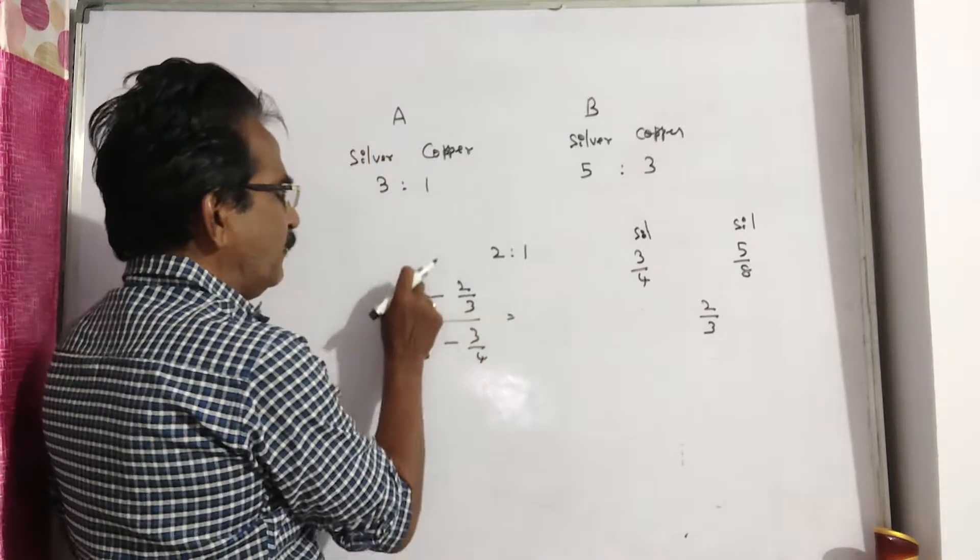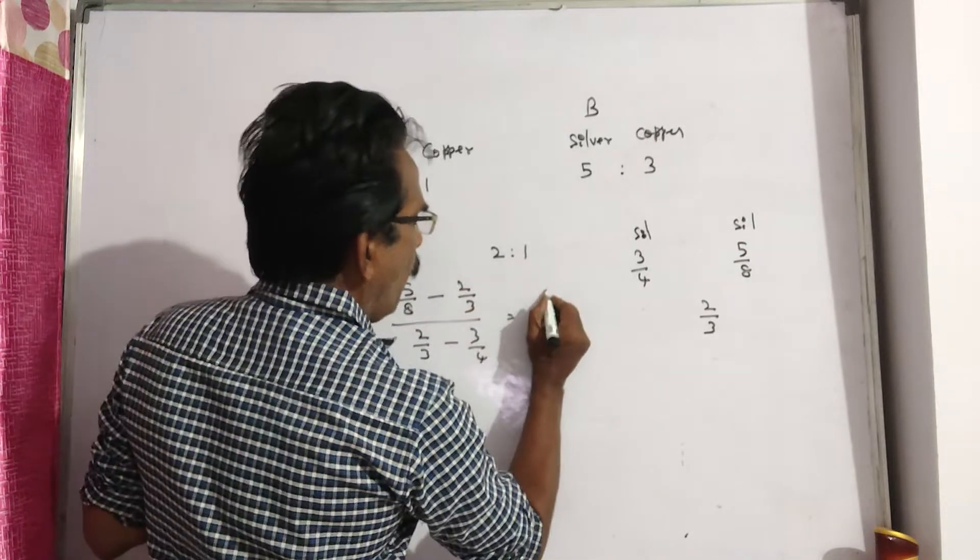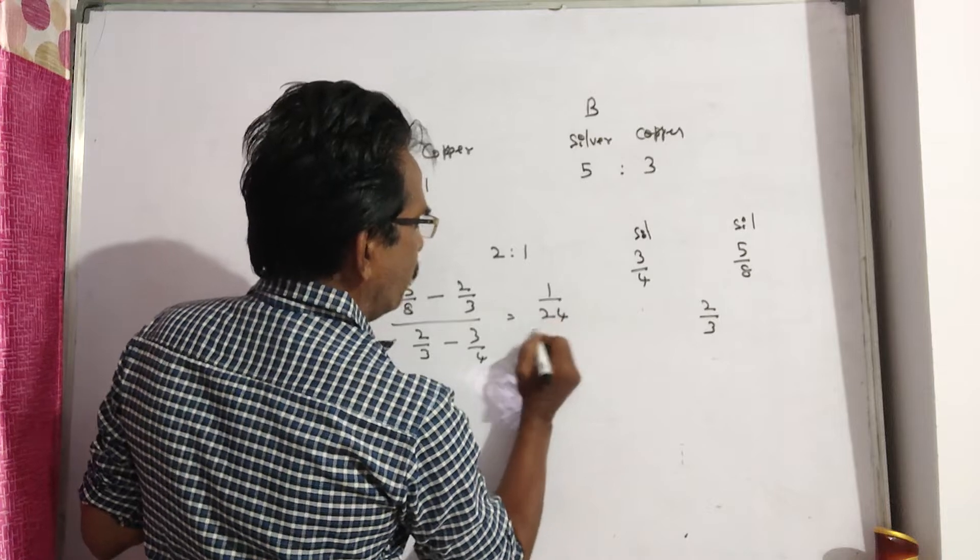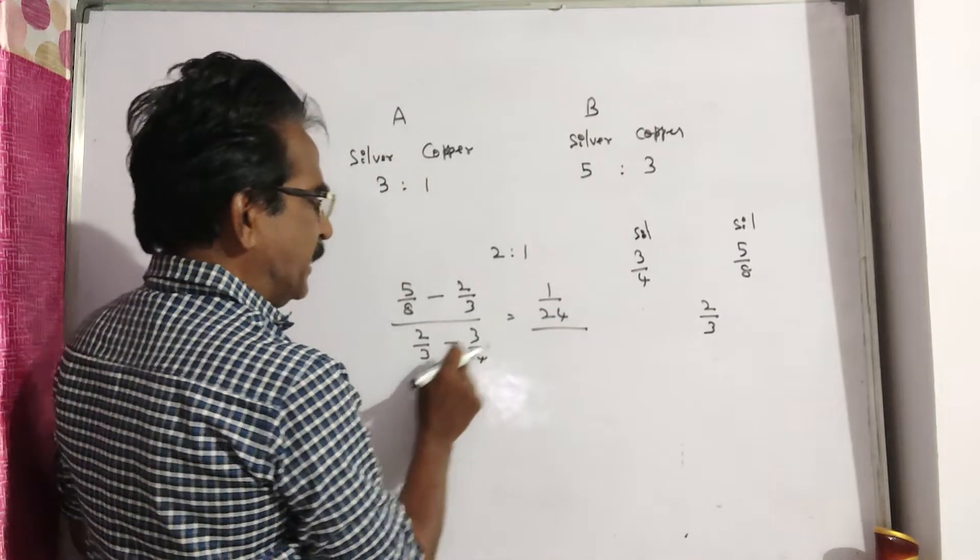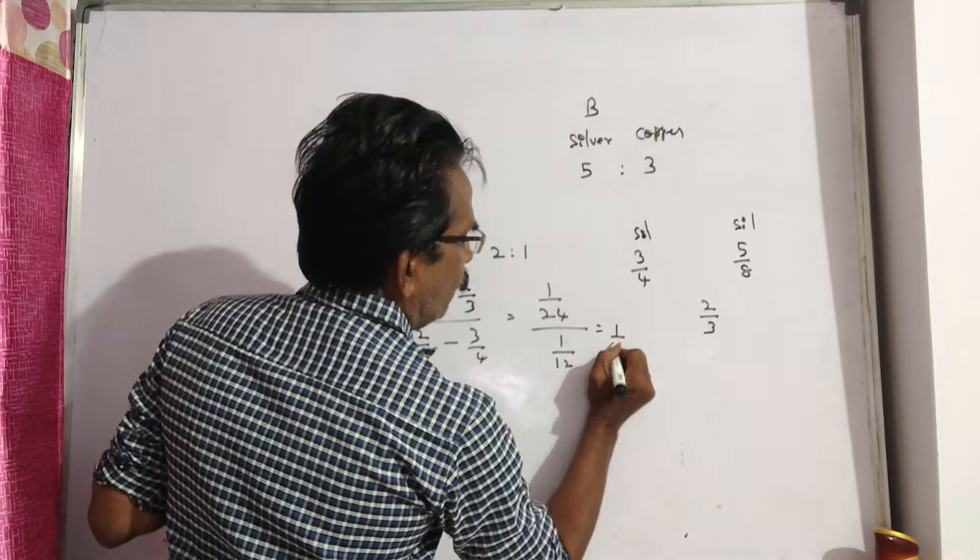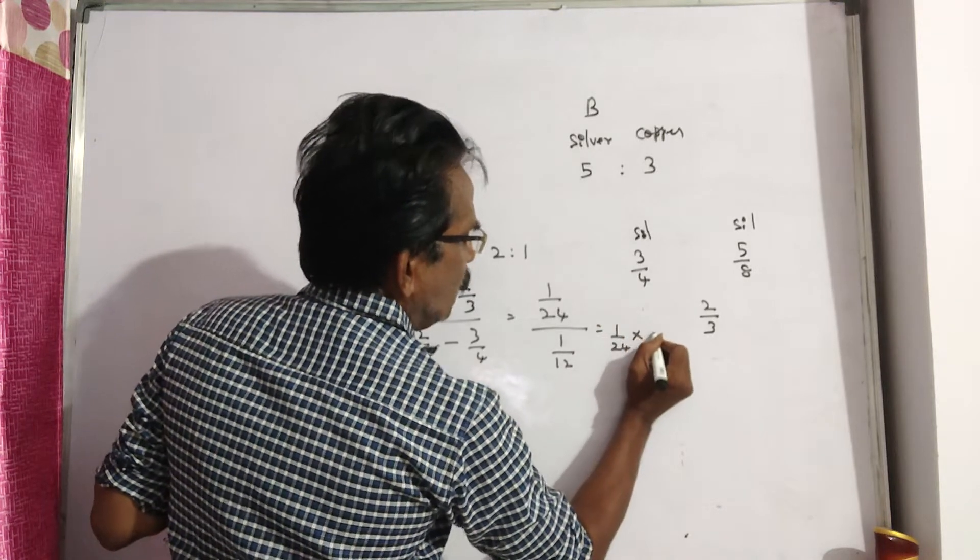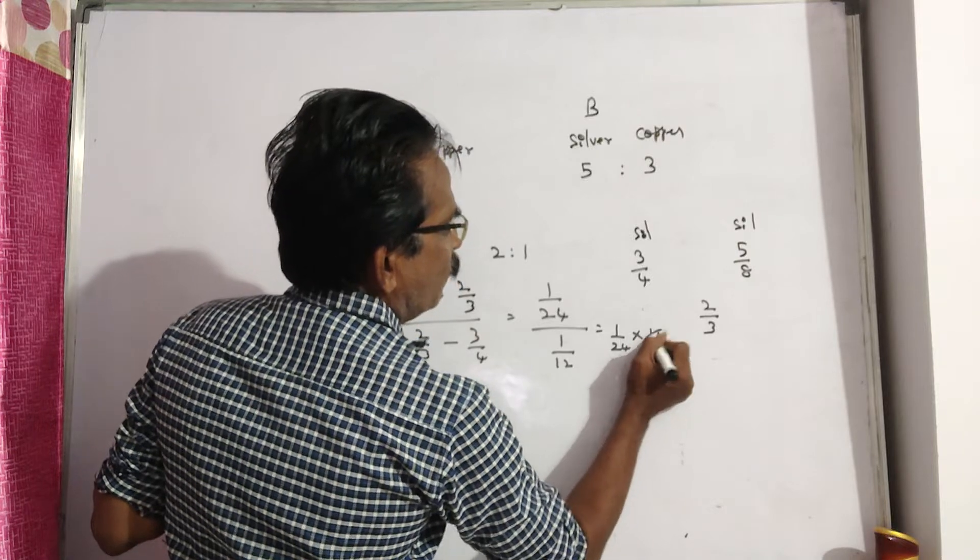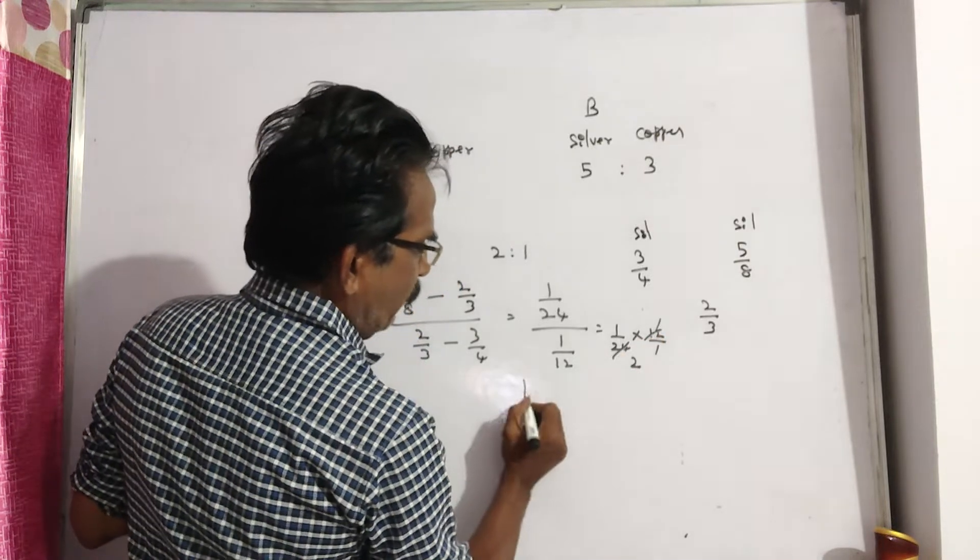This is equal to, by 15 minus 16, 1/24, by 8 minus 9, 1/12. So 1/24 into 12/1, 12 and 24. So 1 to 2.